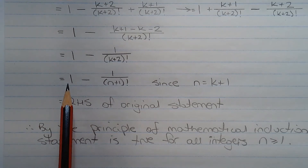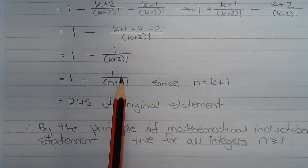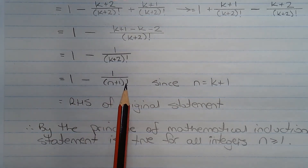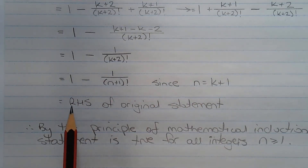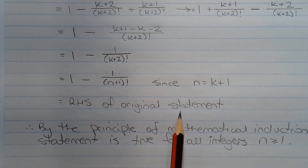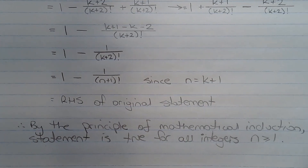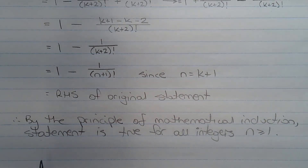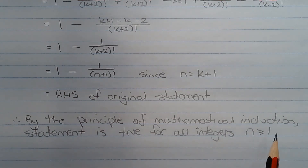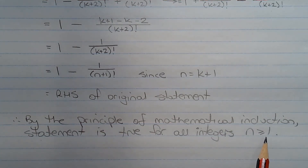And that equals 1 minus 1 over n plus 1 factorial since n equals k plus 1, which equals the right hand side of the original statement. Therefore by the principle of mathematical induction the statement is true for all integers n greater than or equal to 1.